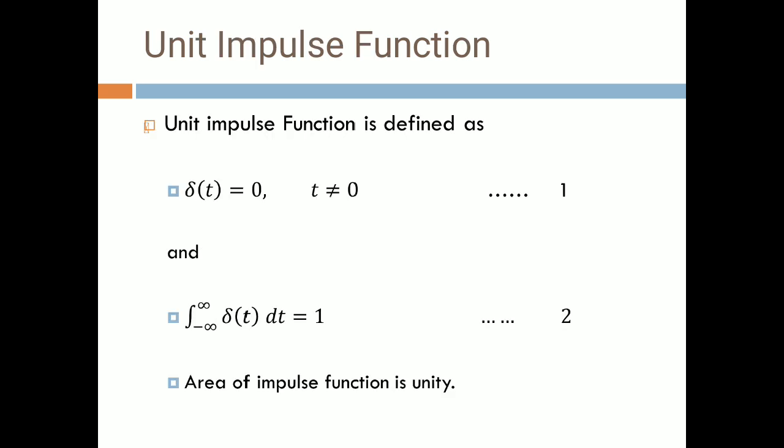Unit impulse function: the unit impulse function is defined mathematically as delta(t) = 0 when t is not equal to 0, and the integral of delta(t) dt = 1 when t is equal to 0. So remember there are two conditions: when time is not equal to 0, its value is 0, and when time is equal to 0, its value is 1. The area of the impulse function is unity.